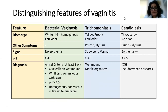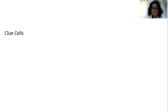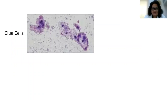Candidiasis presents with a thick, curdy white discharge that is odorless. The patient will also have pruritus and dysuria, and erythema will definitely be present. Characteristically, the pH is acidic — less than 4.5, which is very important. On a smear or wet mount, we see pseudo hyphae or spores.